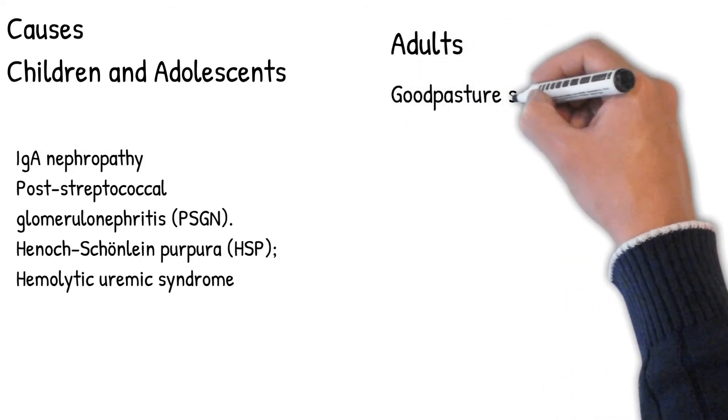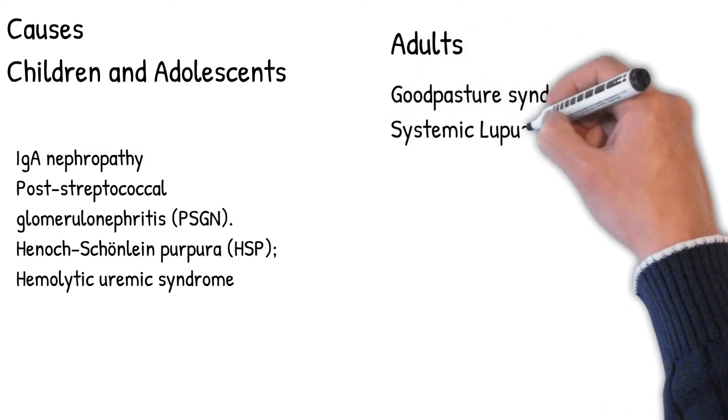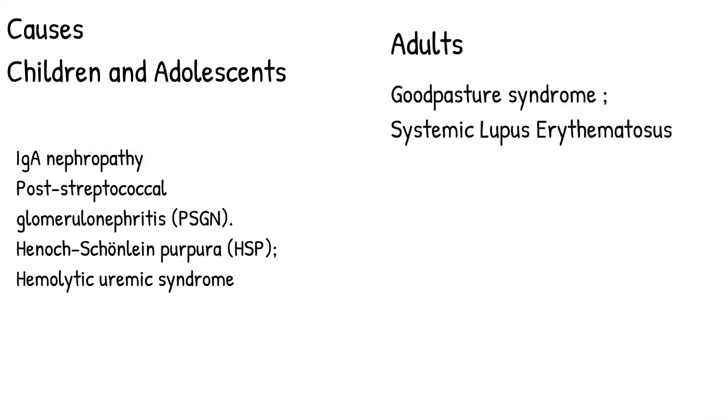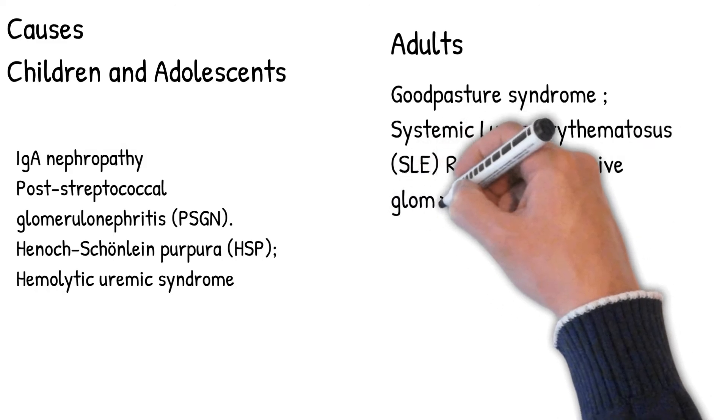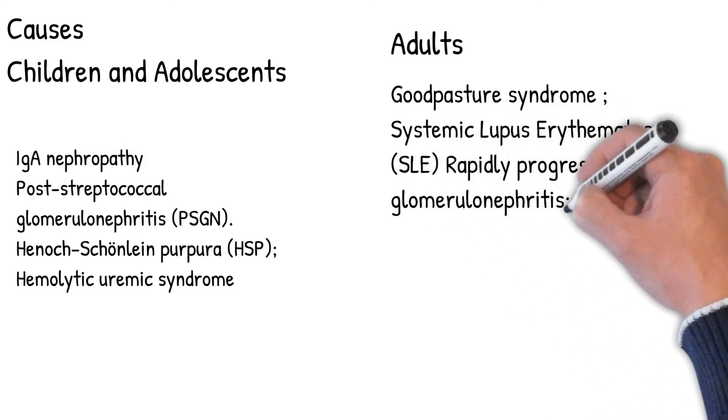Causes in adults: Goodpasture syndrome, systemic lupus erythematosus (SLE) - an autoimmune disease where immune complexes deposit along the glomerular basement membrane and cause glomerular inflammation which leads to nephritic syndrome.